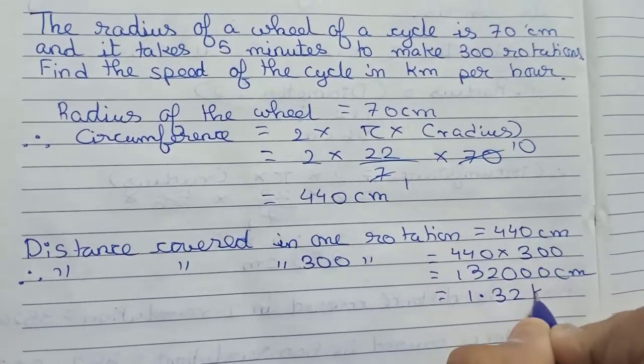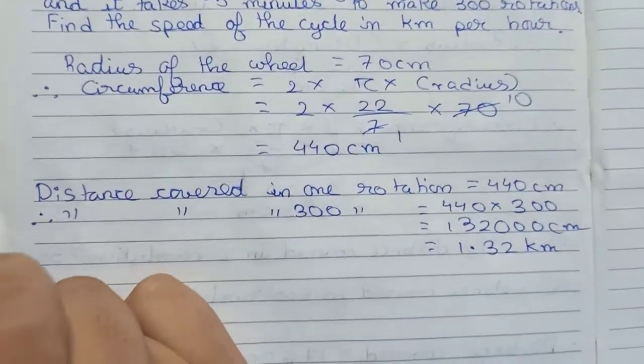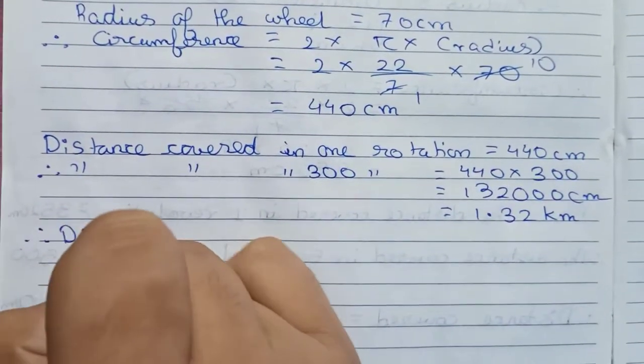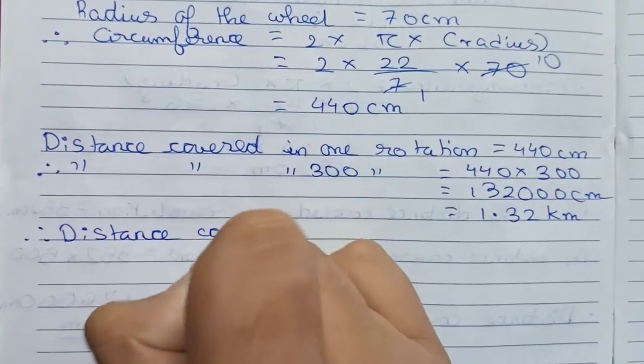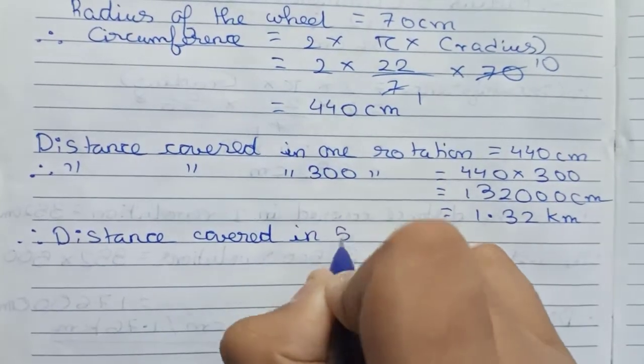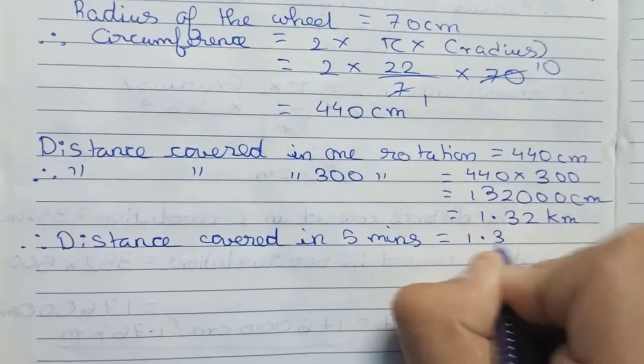So now I write: therefore, the distance covered in five minutes equals to 1.32 kilometers.